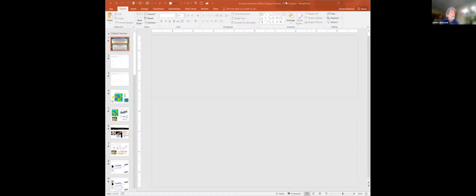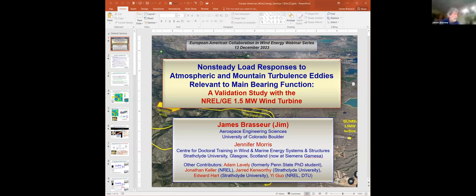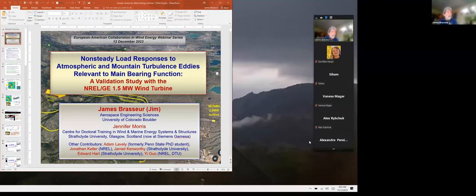Thanks for having me. Today's discussion will focus on local interactions between turbulence — turbulent eddies, energy-dominant turbulent eddies in the atmosphere, the atmospheric boundary layer, the daytime atmospheric boundary layer — as well as mountain turbulence eddies.